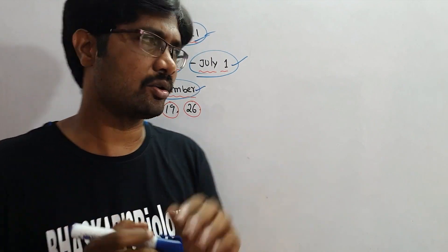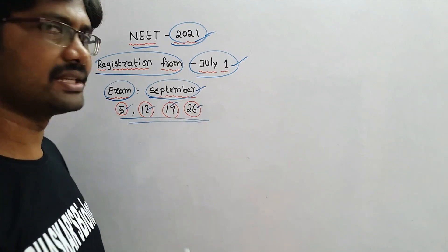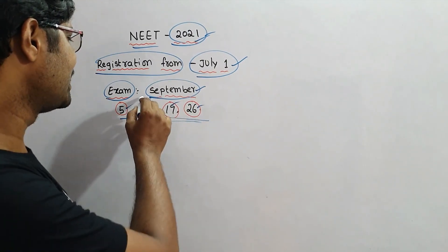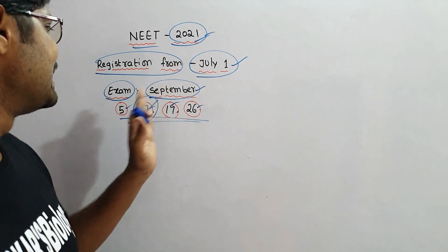We have four Sundays. There are only five Sundays. It is 12th, 19th, and 26th. The maximum of the NEET exam is in September 12.